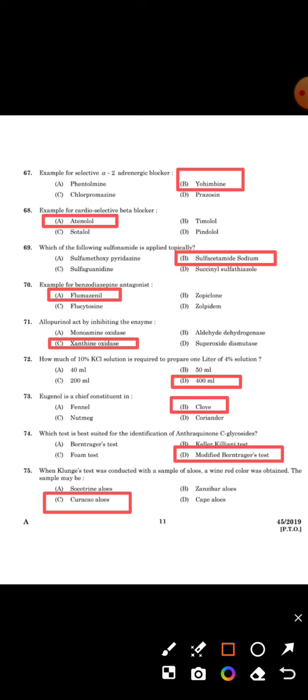Keller-Kiliani test is for differentiating the types of aloes. Then for the solution, question 72: 10% potassium chloride required to prepare 1 liter of 4% solution - questions like that I will discuss later.